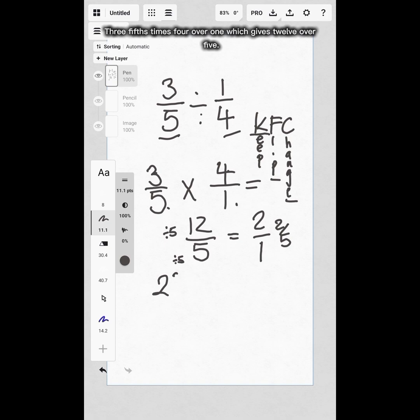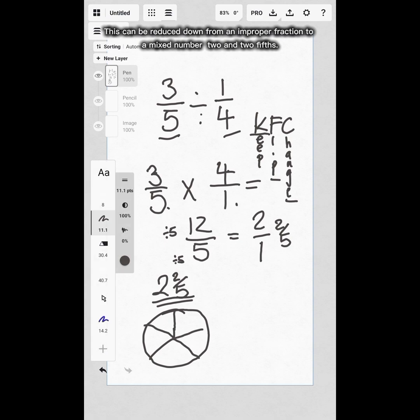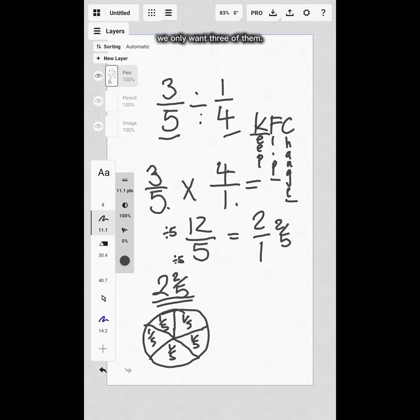one, which gives 12/5. This can be reduced down from an improper fraction to a mixed number: 2 and 2/5. If we visualize this with a pizza or pie split it into fifths, we only want three of